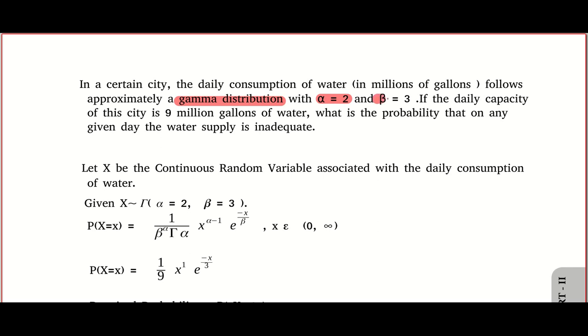Is it hypergeometric? But in continuous, one of the best things is the distribution will be mentioned. And of course, the parameters are also given. If the daily capacity of the city, that means they can provide 9 million gallons of water. And the question is, they are asking, when will this water supply become insufficient? Come on, think about it. The city can supply up to 9 million gallons of water. So when will it become insufficient? When will it become inadequate?